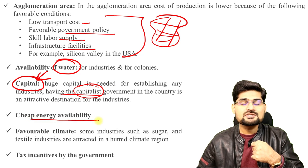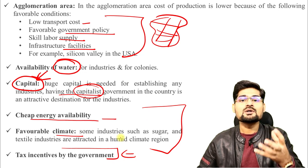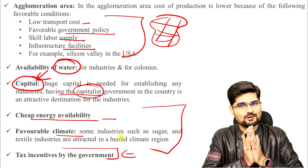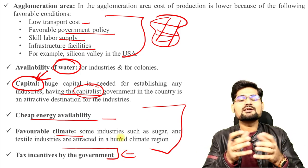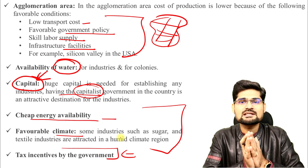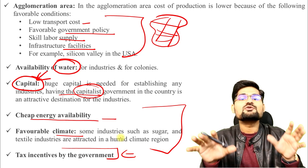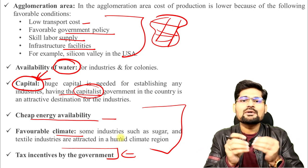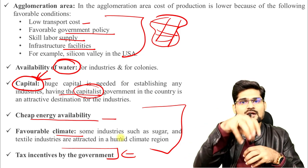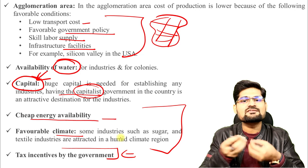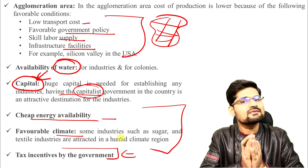Cheap energy availability, favorable climate, and tax incentives by the government are several other factors determining industry locations. These factors are not spread uniformly throughout the world — growth does not happen uniformly. We have polarities and locational areas — important dots on the world map where these facilities are available — which is why industrial hubs thrive in those areas while other areas are devoid of industrial location.